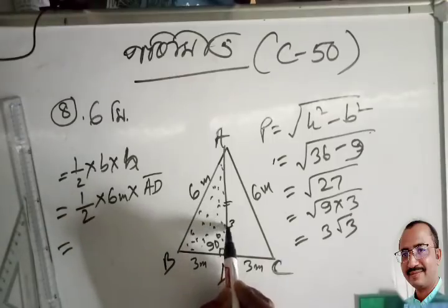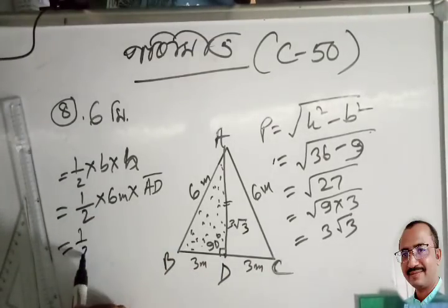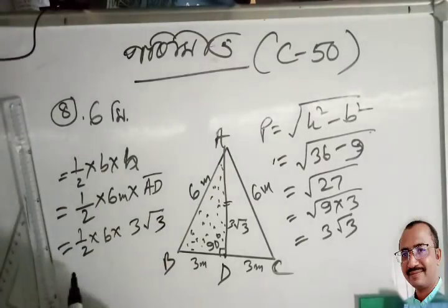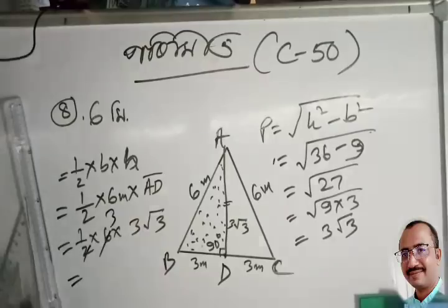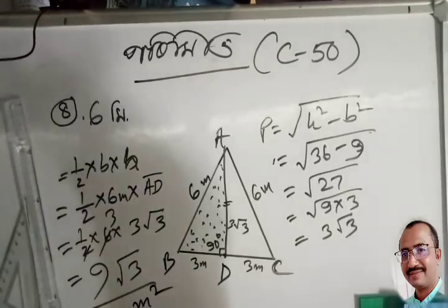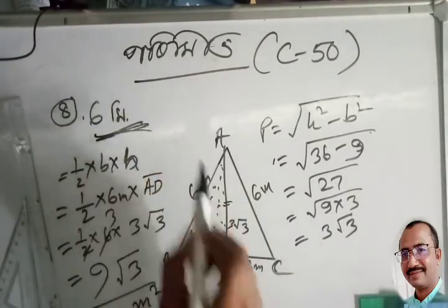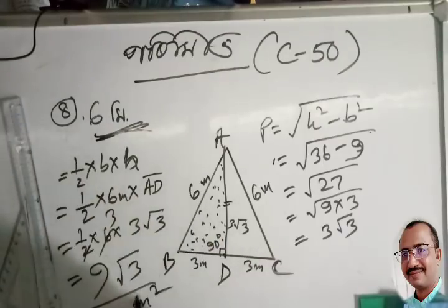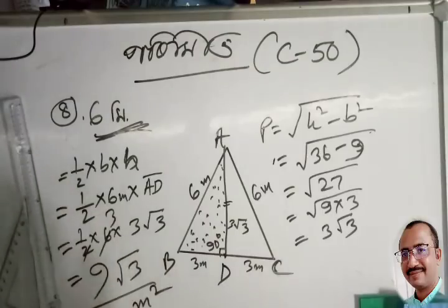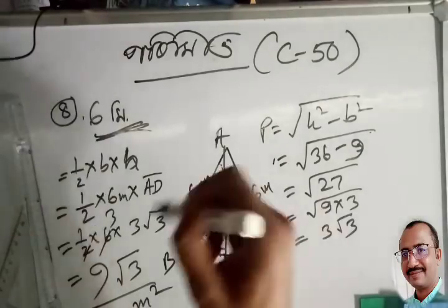The number of times is equal to 3 root 3. So I click half into 6 into 3 root 3. The number of times is equal to 3, 3, 3, and 9 root 3. And the number of times is equal to 2 meters. How many times — the number of times is equal to 100 meters. If you have 2, 3, 2, 3, 2, 1, that is equal to 4 meters, and the answer is equal to 9 root 3 square meters.